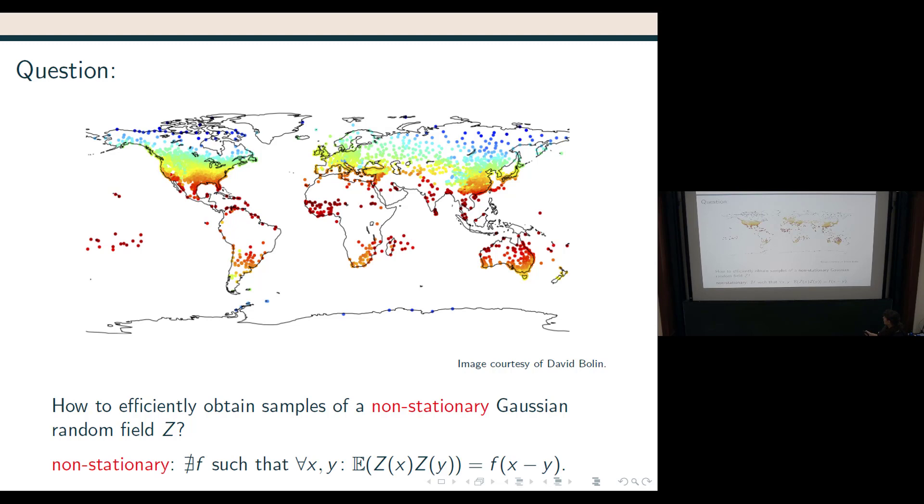Non-stationary means that if you look at the correlation, so the covariance function, then you cannot write it as some function of x minus y. So many of the Gaussian fields that you are familiar with, they do have this property that you actually start off from a covariance function and you build your field from there, but in this case we do not have a covariance function with this property.